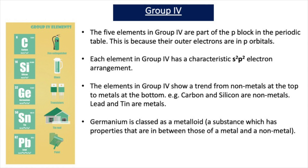Group 4 consists of the following elements: carbon, silicon, germanium, tin and lead. The five elements in group 4 are part of the p-block in the periodic table, because their outer electrons are in p-orbitals. Each element in group 4 has a characteristic s2p2 electron arrangement.